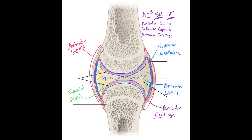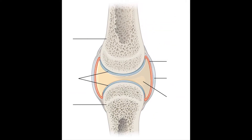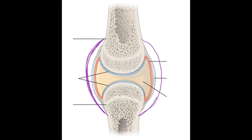Now that we know the five basic components, we can move on to other joint components found in some synovial joints. When dealing with synovial joints, there are ligaments that help connect the two skeletal structures together. In some synovial joints there are more ligaments than others. There are three different types. The first are ligaments found outside of the articular capsule, connecting from bony structure to bony structure — these are called extracapsular ligaments.